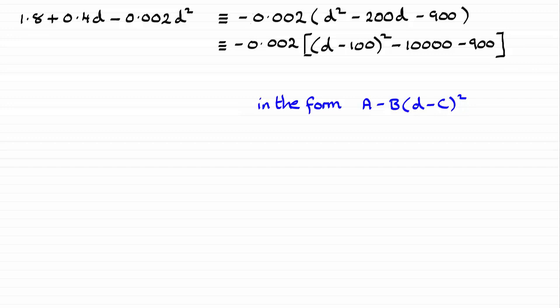It's just a question now of simplifying this. And if you multiply minus 0.002 with minus 10,900, you'll end up with this 21.8. And then you've got minus 0.02 times the d minus 100 all squared.